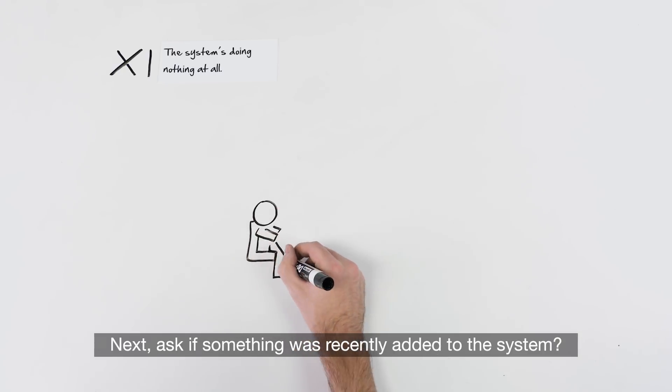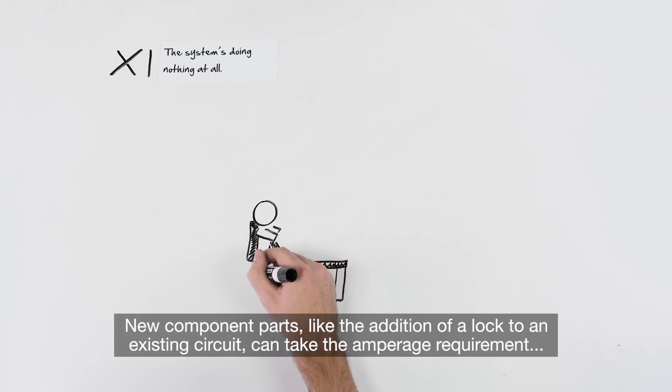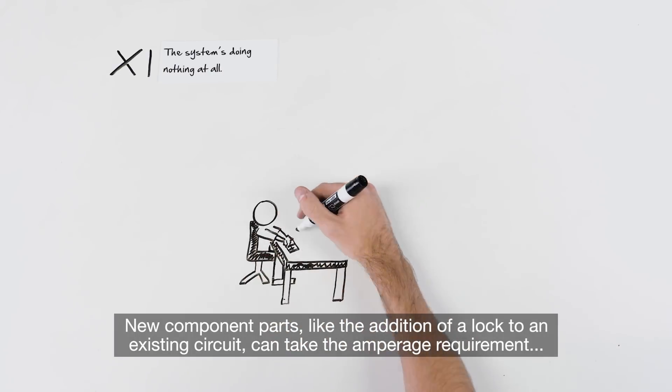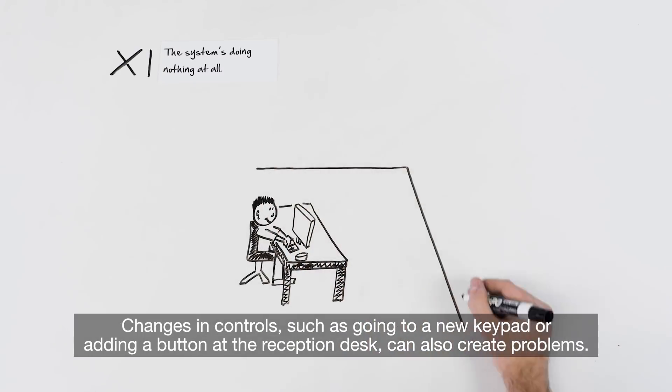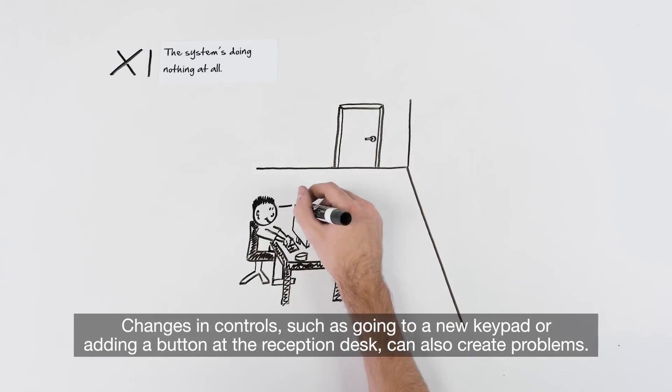Next, ask if something was recently added to the system. New component parts, like the addition of a lock to an existing circuit, can take the amperage requirement of the system beyond the amperage provided by the power source. Changes in controls, such as going to a new keypad or adding a button at the reception desk, can also create problems.